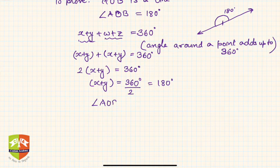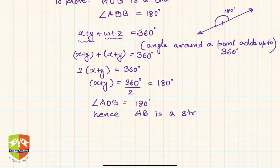Hence, my dear friends, AB is a straight line. Why? Because OA and OB are opposite rays. Is that clear?